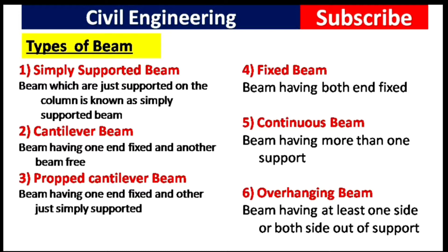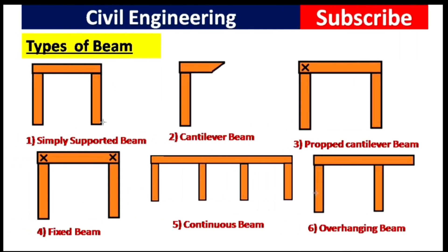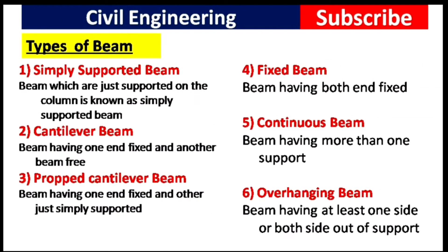The first type of beam is the simply supported beam. A beam which is just supported on the column is known as a simply supported beam. As you can see in this picture, the beam is simply supported on the columns.